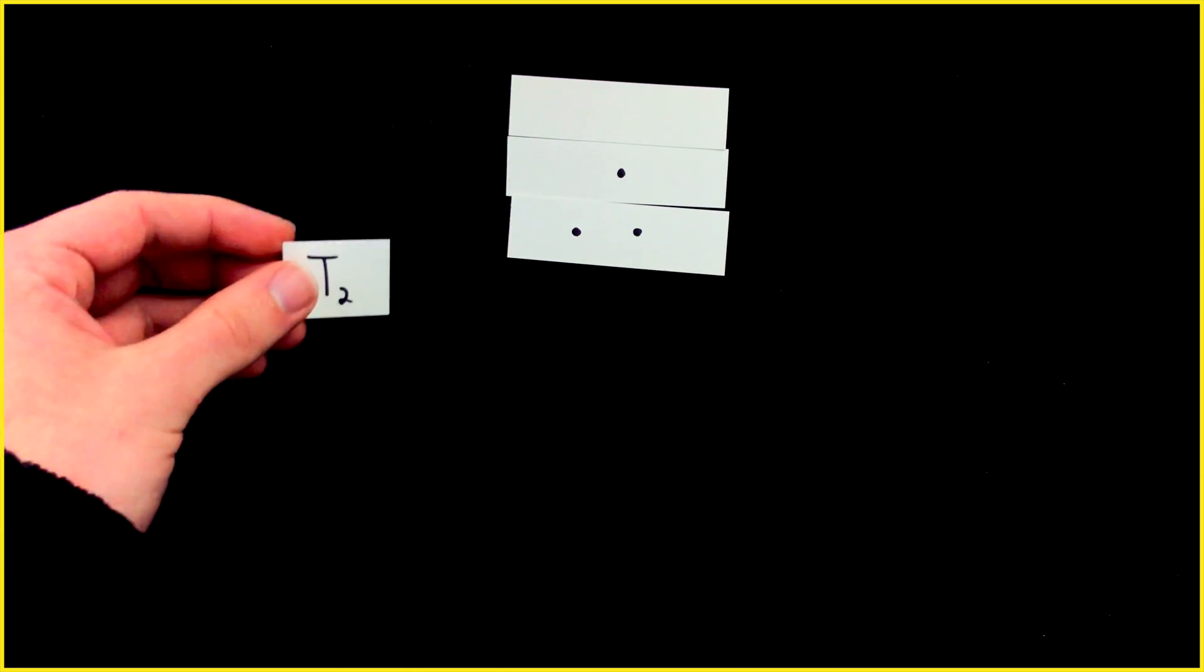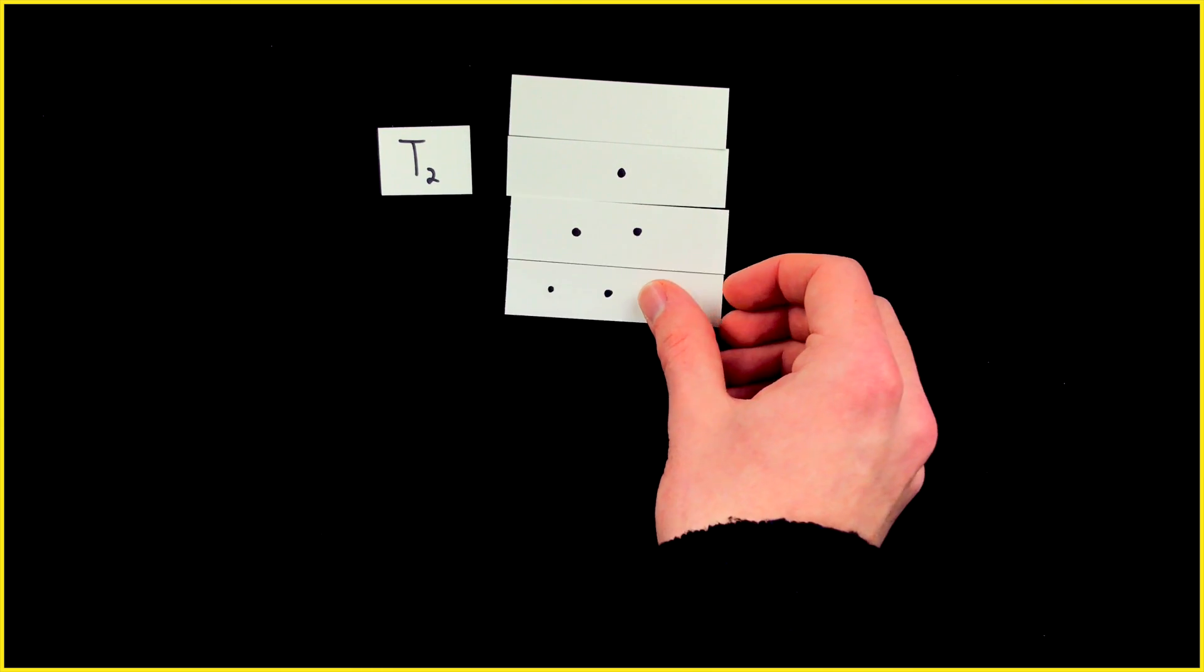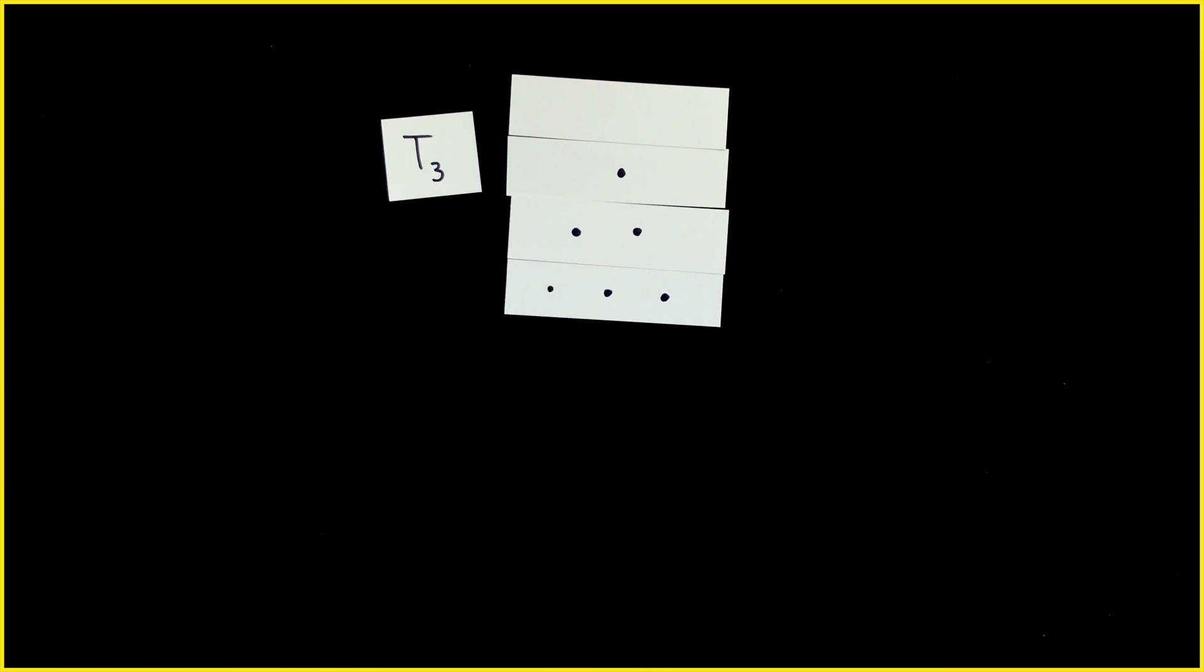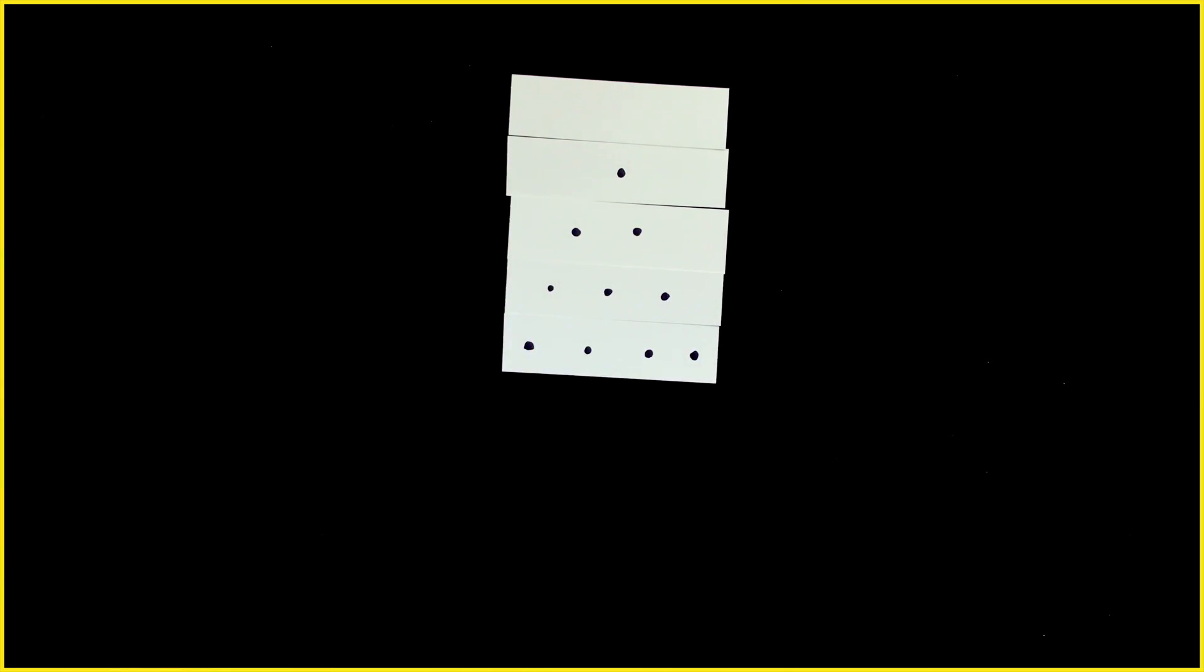to increase the sides of the triangle by one and find T2, we need a second row with two dots. For T3, we need to add a third row with three dots. T4, add a fourth row with four dots. It's settled.